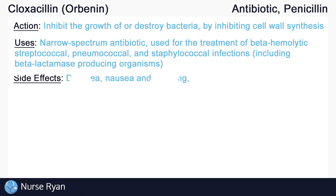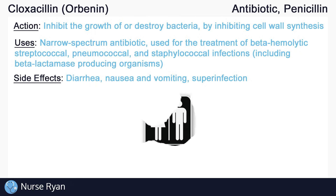Some of the possible side effects of Cloxacillin include diarrhea, nausea and vomiting, and superinfection. Superinfections are infections occurring after or on top of another infection, and are thought to be caused by damage to the host flora, which normally prevent the growth of pathogenic organisms.